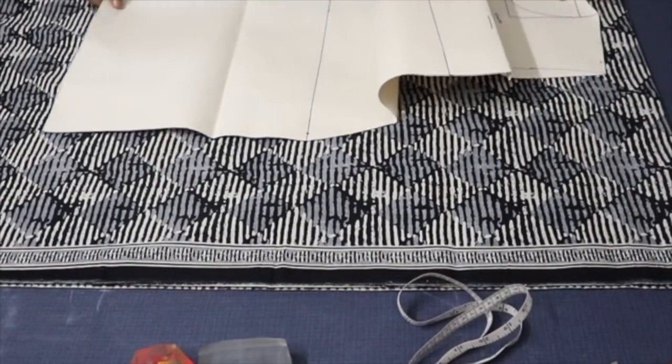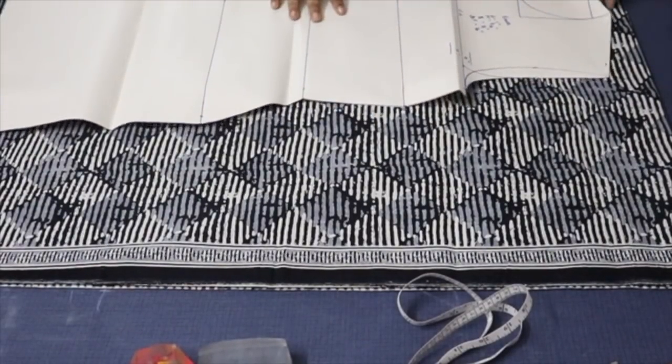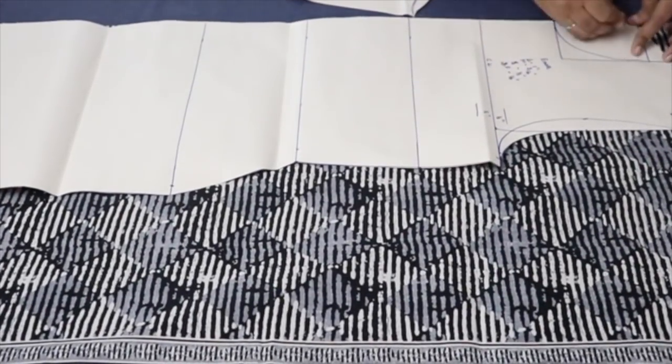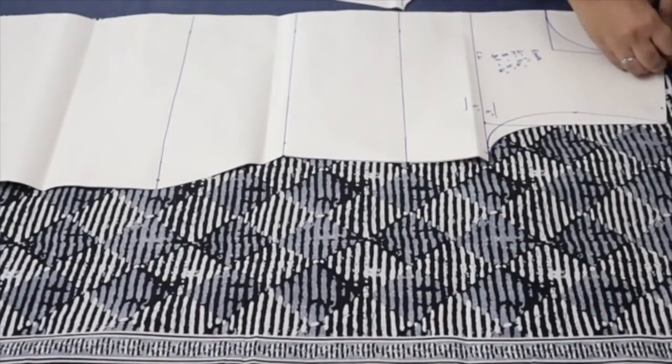Now take your paper pattern. Place it on the folded side. So the neck part should be placed on the folded side. Start pinning all over the pattern.